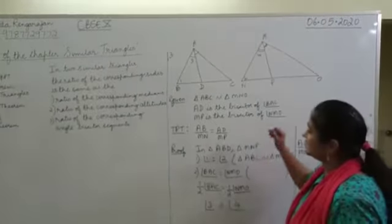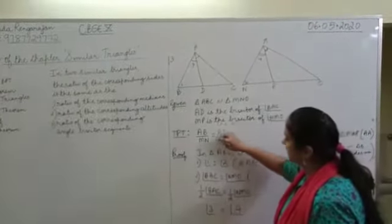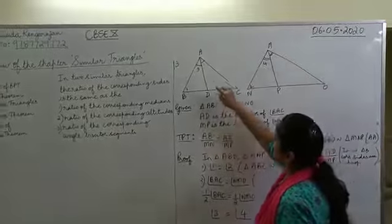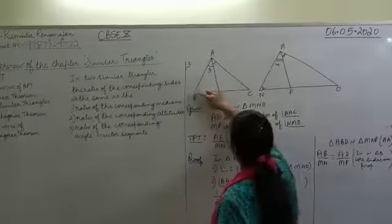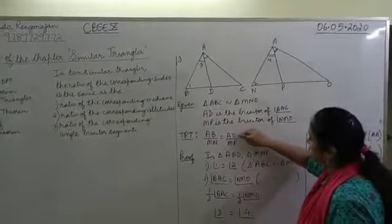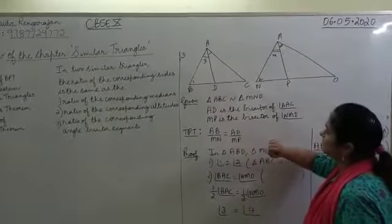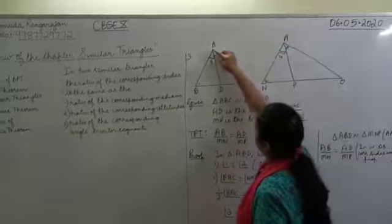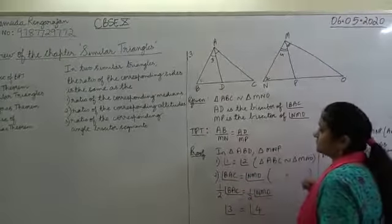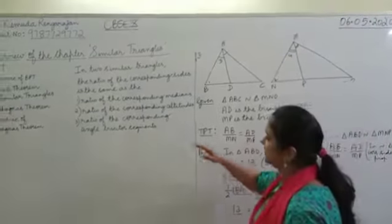Given this, we need to prove that AB by MN equals AD by MP.